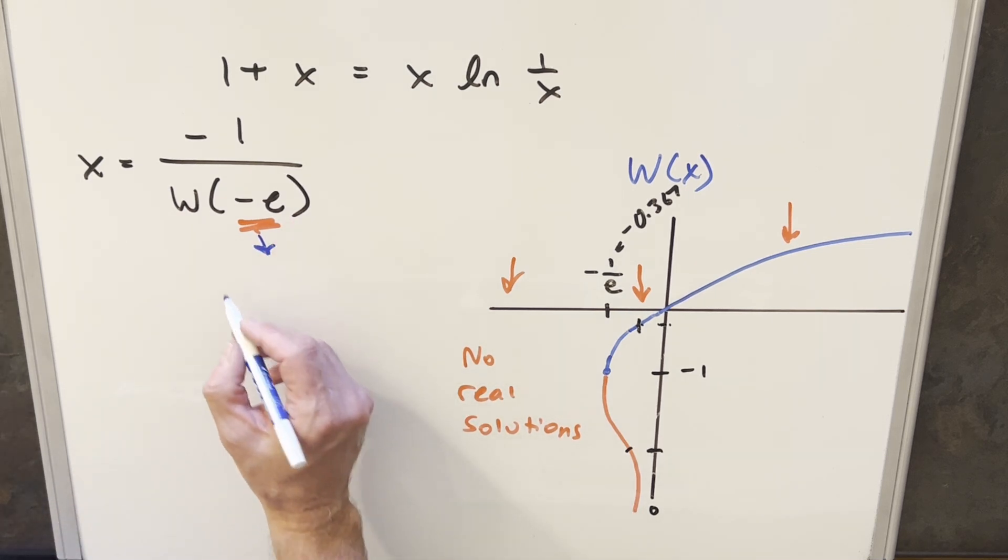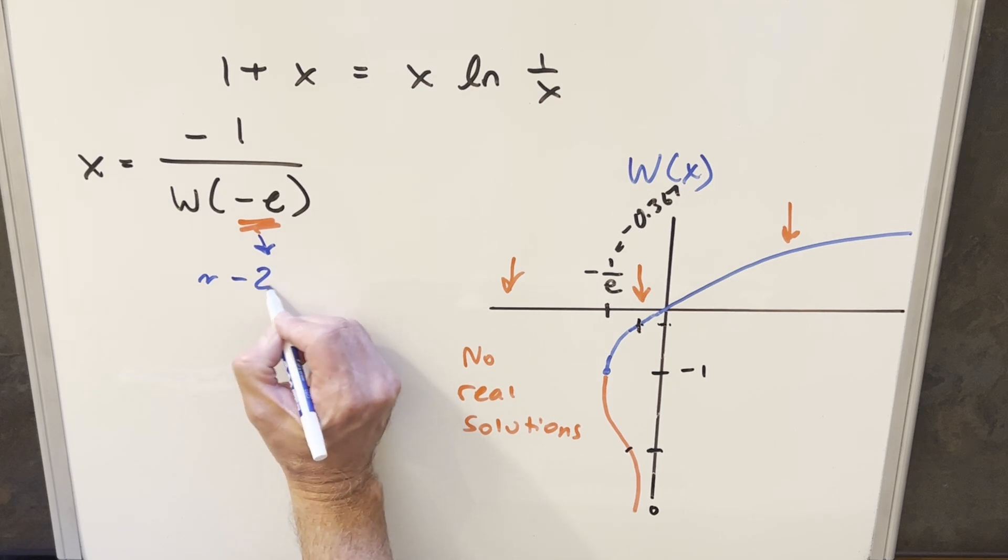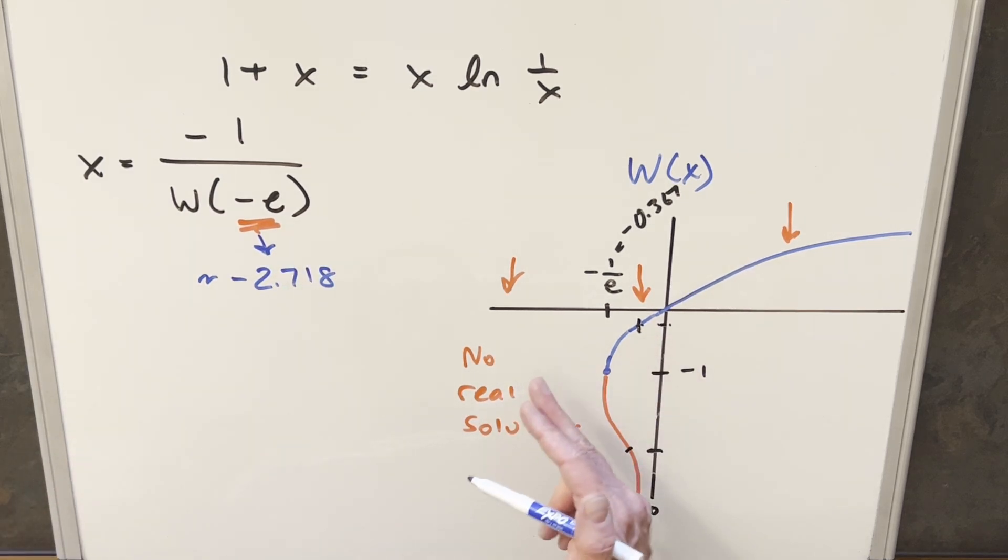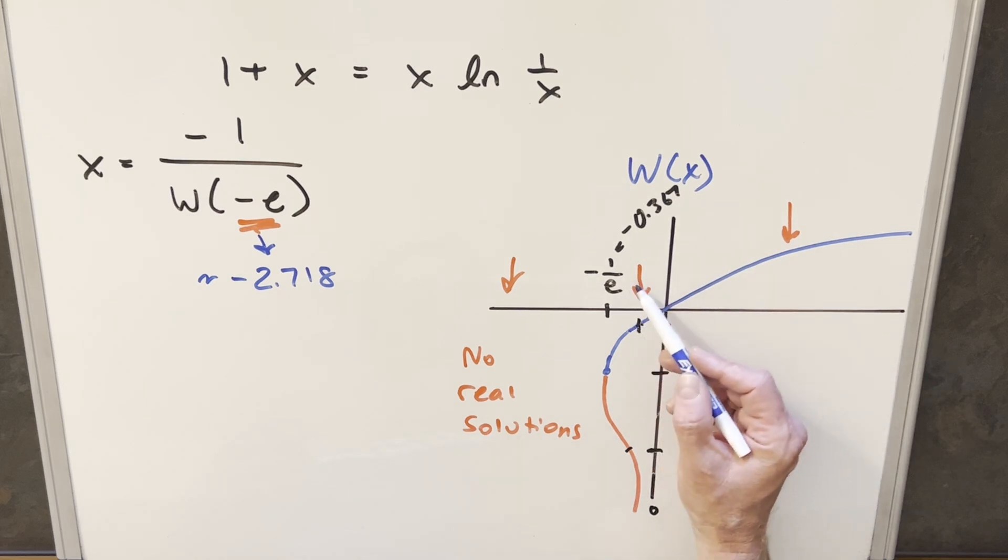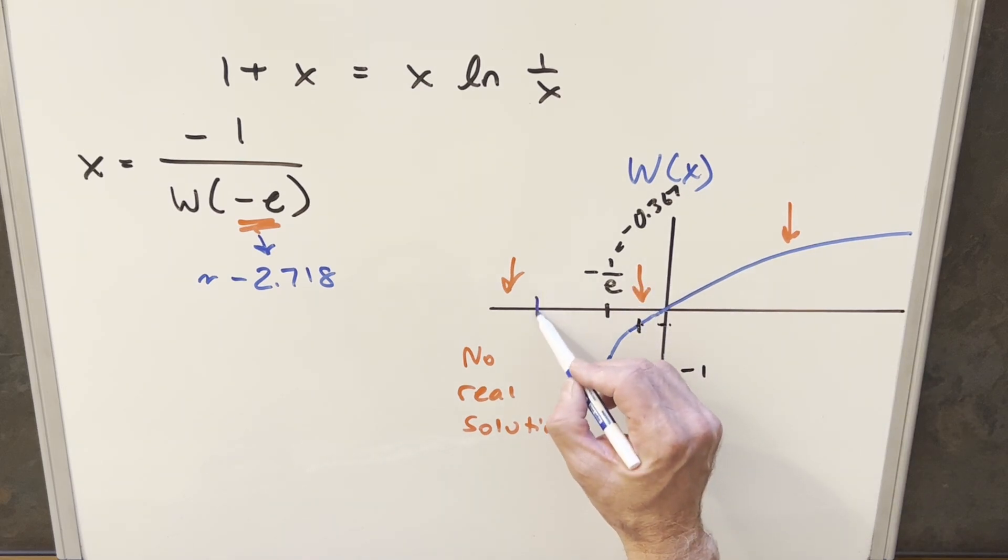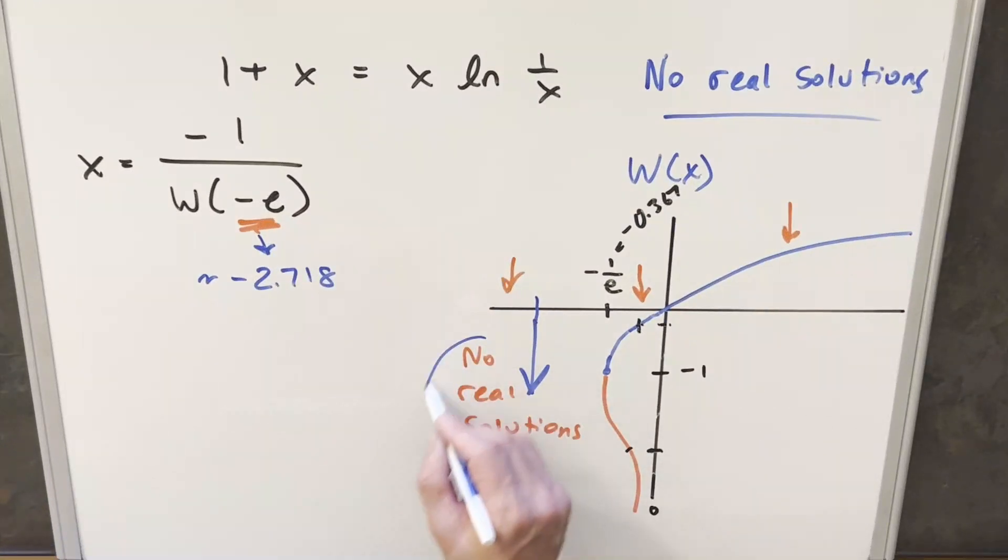Well, e is something like 2.718. So this is going to be something like minus 2.718. And so this x value right here is going to be clearly like off this curve, it's going to be less than this minus one over e, it's going to be somewhere out here. And so this is going to give us no real solutions to this. So kind of a disappointing result.